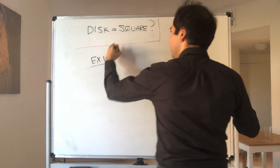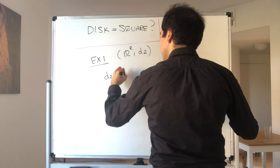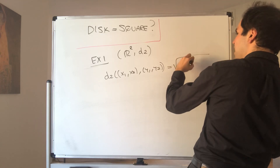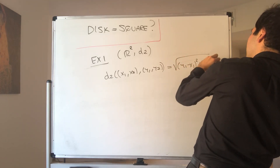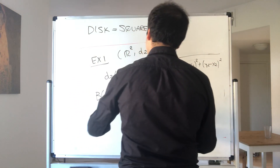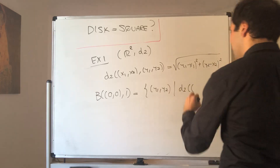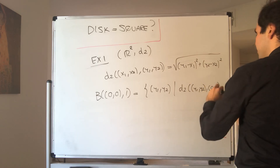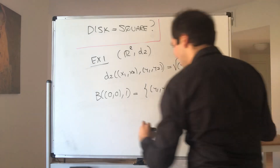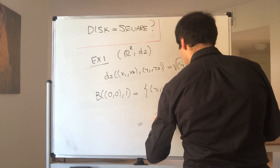For the usual metric, if you take R2 with D2 — just the usual distance function — D2 of (x1, x2) and (y1, y2) equals the square root of (y1 minus x1) squared plus (y2 minus x2) squared. In this case, you can show that the ball centered at (0, 0) with radius 1 — the set of points (y1, y2) where the distance between (y1, y2) and (0, 0) is less than 1 — is just the usual disk centered at (0, 0) with radius 1.